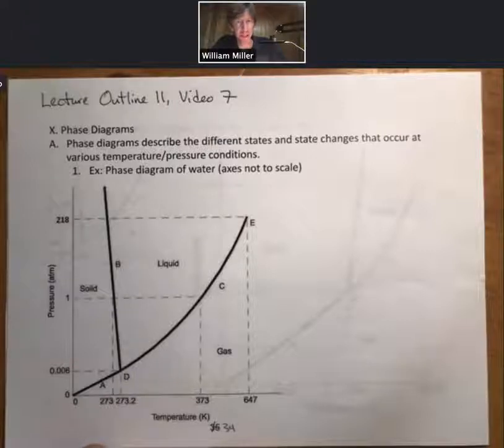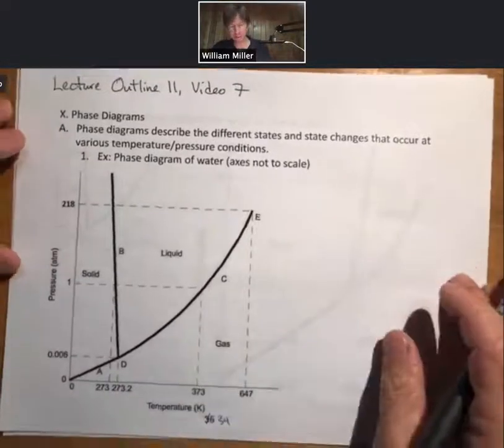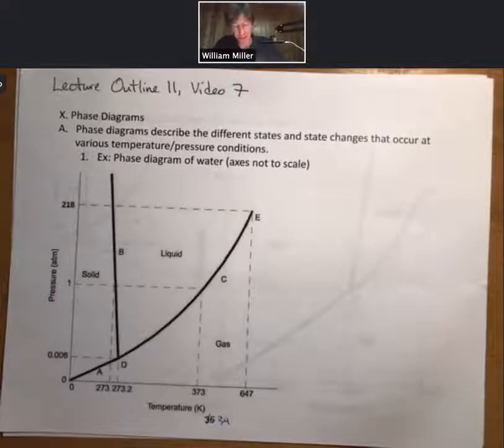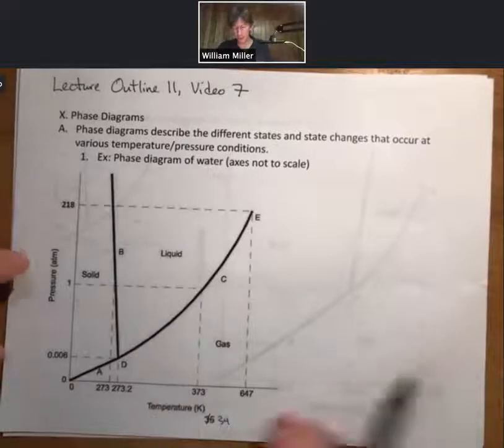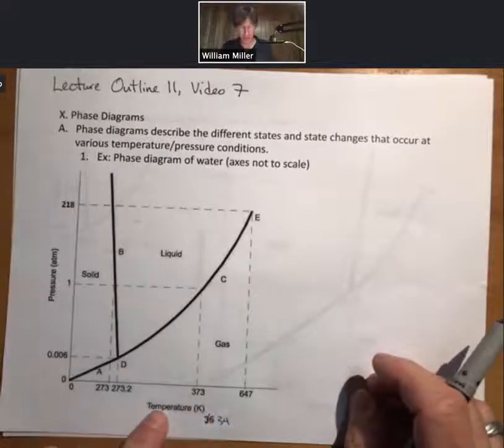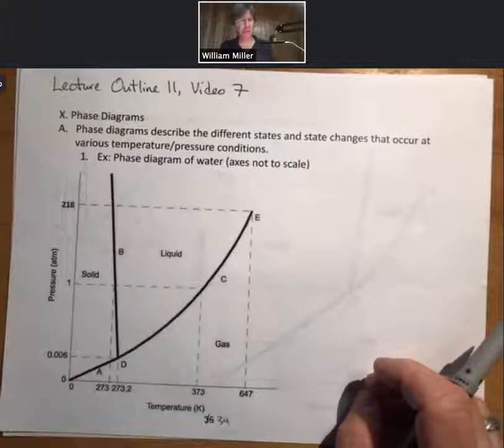Last video for this lecture outline. So there's a little bit we have to know about phase diagrams. First off, they describe different states and state changes that occur at various temperature and pressure conditions. We've got pressure on the y-axis here, we've got temperature on the x-axis, and that will always be true.